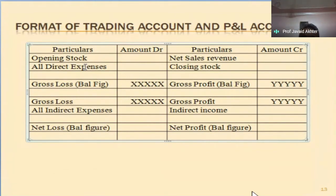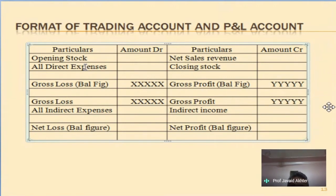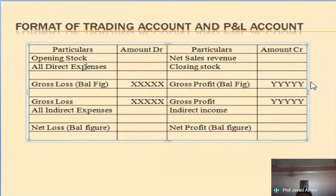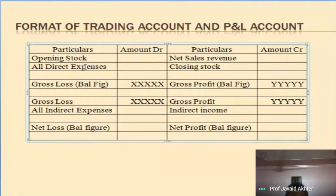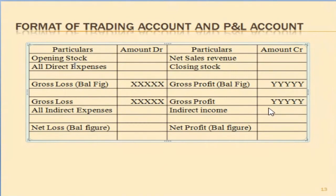Examples of indirect expenses include salary, depreciation, advertisement, and rent. Rent is a classic example — whether you occupy a building for 2 days or a full month, the landlord will charge you rent. All direct expenses are written on the debit side, and net sales revenue on the credit side — net sales means sales minus sales returns. The difference between the two sides gives either gross profit or gross loss.